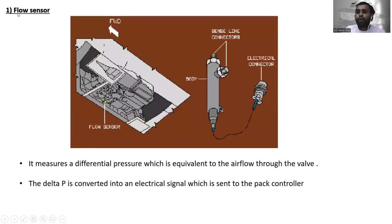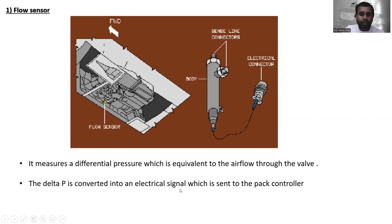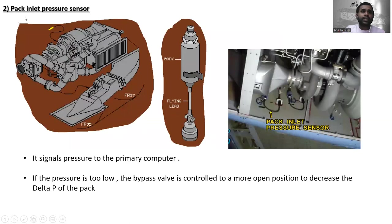The first component is the floor sensor. You can see the floor sensor location here, in the right path. This is the electrical connector, the sense line connectors, and the floor sensor body. It measures a differential pressure which is equivalent to the airflow through the valve. The delta pressure is converted into an electrical signal which is sent to the pack controller.